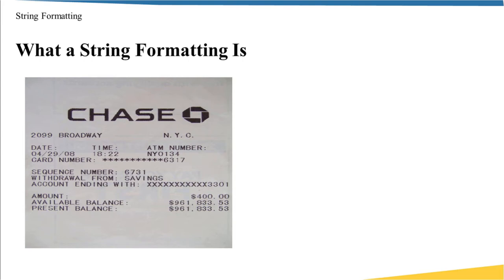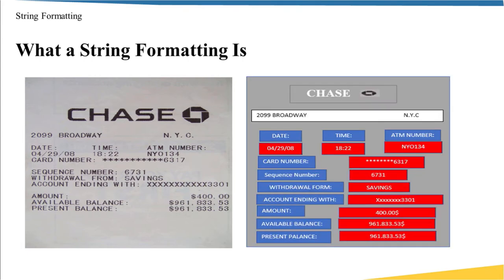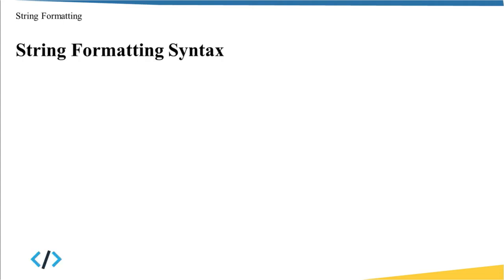What we all note is that whenever we want to withdraw money from the ATM, we will get exactly the same receipt with the same field names — the ones highlighted in blue — but with different values — the ones highlighted in red. In other words, the field names are always the same whereas the field values are different. This is exactly what string formatting helps us do in Python: create a template once and then generate as many samples as we want by passing different values.